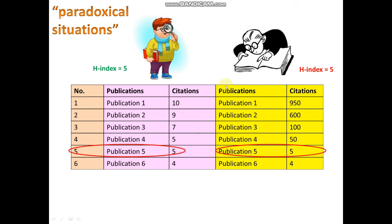H-index is sensitive to both quantity of publications and quality — quality being reflected by the number of citations. If you improve the quality of your publications you will get more citations, but it takes time. Young researchers get fewer citations even with good quality papers, simply because accumulating citations takes time.